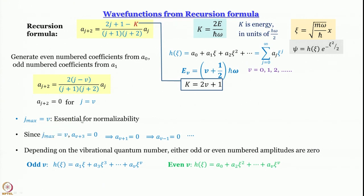This recursion formulae connect alternate amplitudes. Depending on whether j is even or odd, all amplitudes for odd or even terms respectively are going to be 0 because you will not be able to access them.